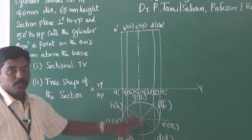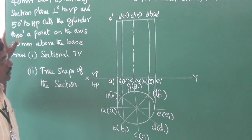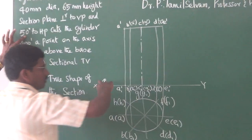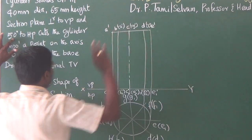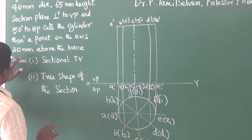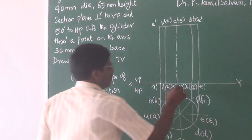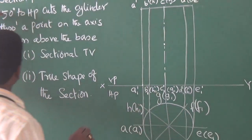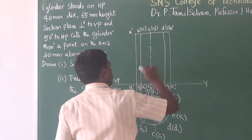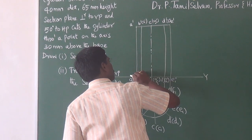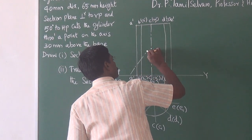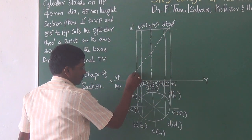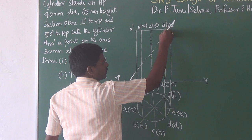Now I have completed the projection of solid. Next I have to introduce the cutting plane which is inclined at 50 degrees to HP. Inclination with HP is visible in the front view. Therefore, I have to introduce a 50-degree line at a distance of 30 mm above the base. From here mark 30 mm above the base, and through this I introduce a 50-degree cutting plane. The cutting plane comes like this.